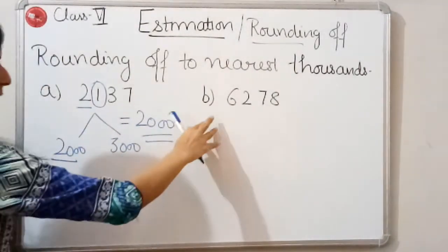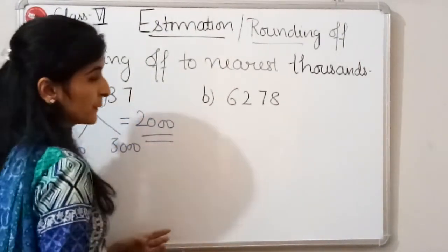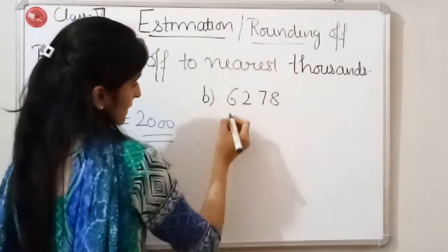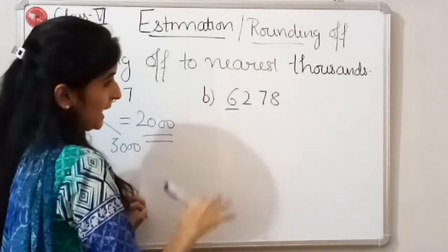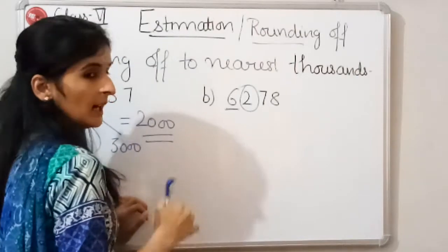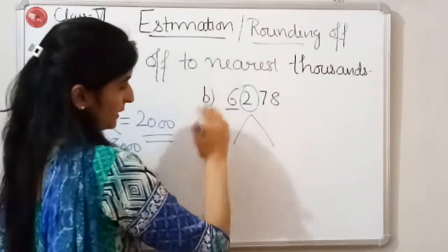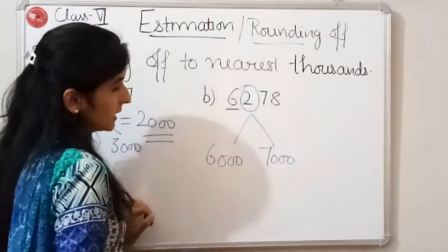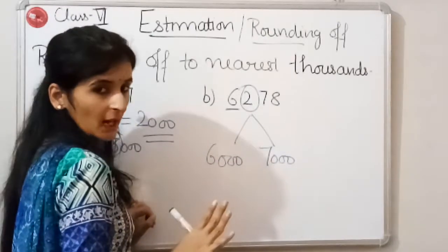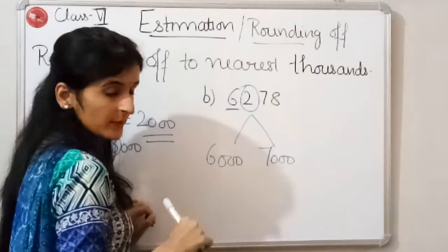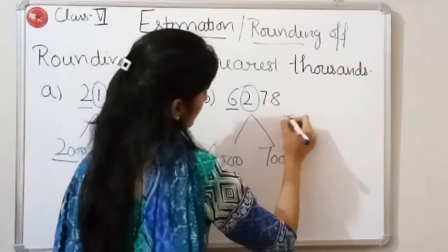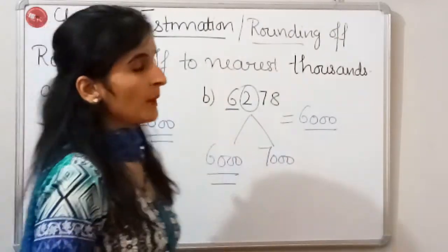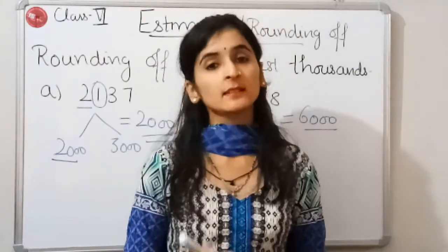For part B, we check which digit is on thousands place — there is 6. We highlight the digit on its right. The number lies between 6000 and 7000. We compare 2 with 5 — since 2 is less than 5, it rounds off to the previous thousands, which is 6000. So that covers rounding off to nearest tens, hundreds, and thousands.